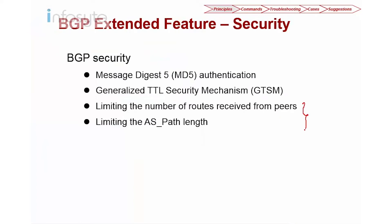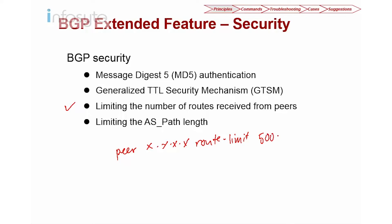The other two security options are not strictly authentication methods, but they help prevent certain attacks. You can limit the number of routes received from a peer to prevent memory exhaustion. The command is 'peer [IP] route-limit [number]'. The maximum in the current VRP is 500,000 routes. You can reduce this — for example, allowing a maximum of 100,000 prefixes from a peer.